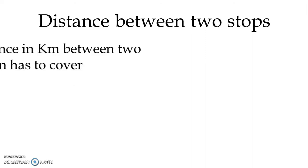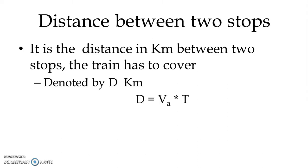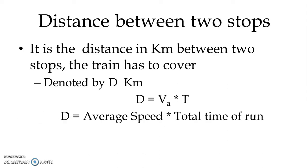Distance between two stops is the distance in kilometers that the train has to cover between two stops. It is denoted by capital D and measured in kilometers. Mathematically, D can be written as the product of average speed multiplied by the total time of run T. So distance D equals average speed multiplied by total time of run.